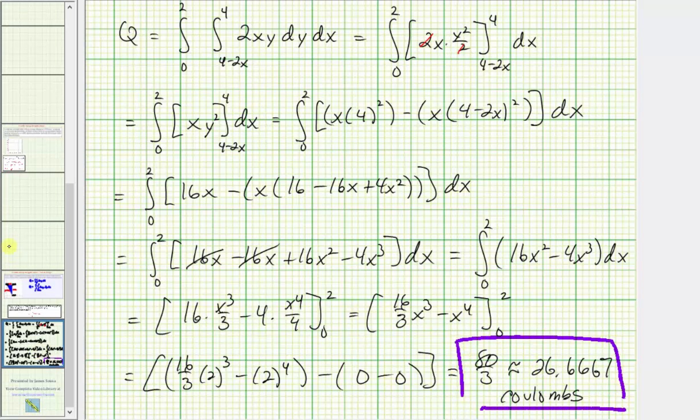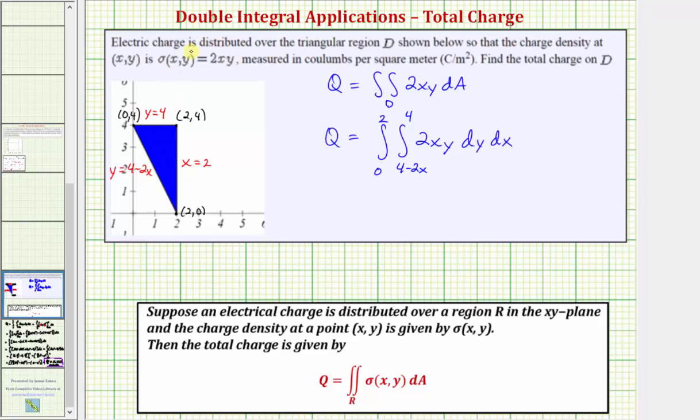So again, this would be the total charge over this region, given the density function sigma of x comma y equals two xy. I hope you found this helpful.